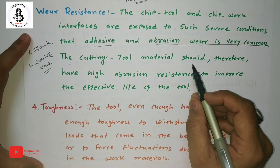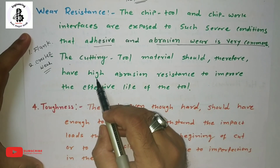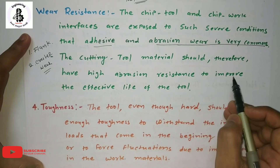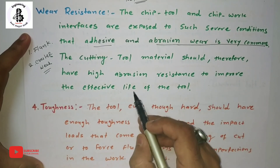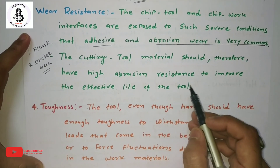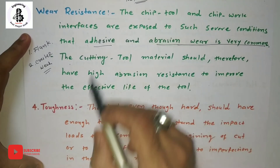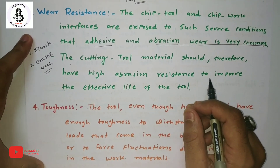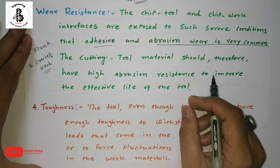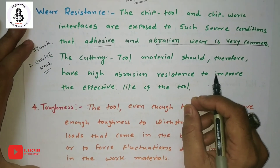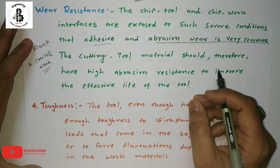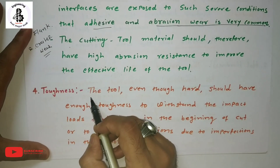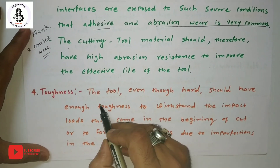The cutting tool material should therefore have higher abrasion resistance to improve the effective life of the tool. Tool life is represented by Taylor's tool life equation, as discussed in previous lectures.